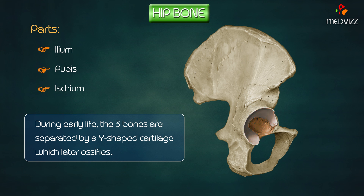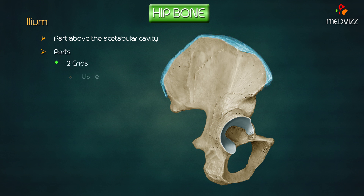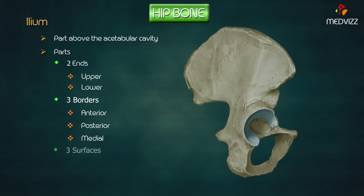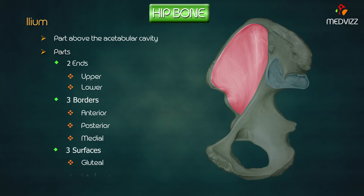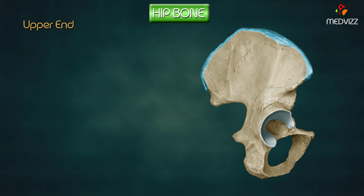During early life, the three bones are separated by a Y-shaped cartilage which later ossifies, the place of union being in the walls of the acetabular cavity. The ilium is the flat expanded part above the acetabular cavity. It has two ends (upper and lower), three borders (anterior, posterior, and medial), and three surfaces: gluteal, iliac fossa, and pelvic.